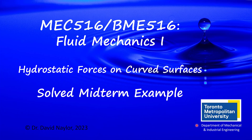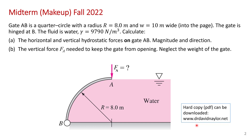This is another example of solving for the hydrostatic forces on curved surfaces, and this happens to be a solved midterm example. The problem reads: gate AB is a quarter circle with radius 8 meters, and the gate has a width into the page of 10 meters. The gate is hinged at point B, and the fluid has a standard specific weight of 9790 newtons per cubic meter. We're asked to calculate the horizontal and vertical hydrostatic forces on the gate — both magnitude and direction — and in part B, the downward force applied at point A that will keep the gate from opening. For simplicity, we're told to neglect the weight of the gate.